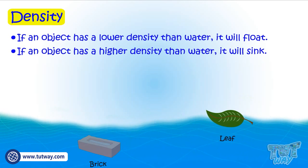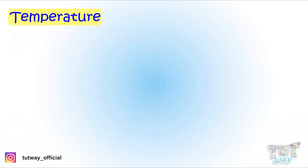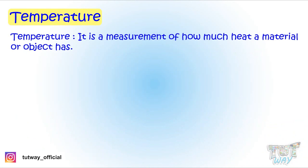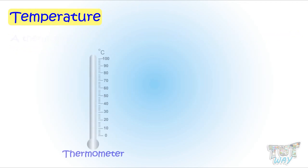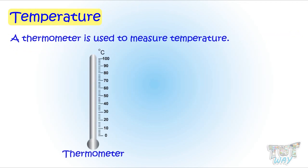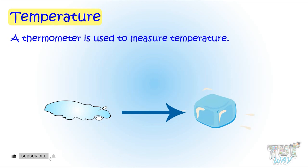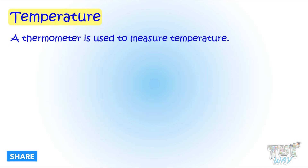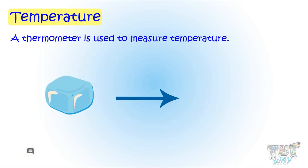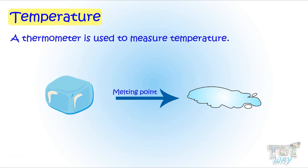Now let's learn about temperature. Temperature is a measurement of how much heat a material or object has. A thermometer is used to measure temperature. In science, when water changes state from liquid to solid, it is called the freezing point. When water changes state from solid to liquid, it is called the melting point.